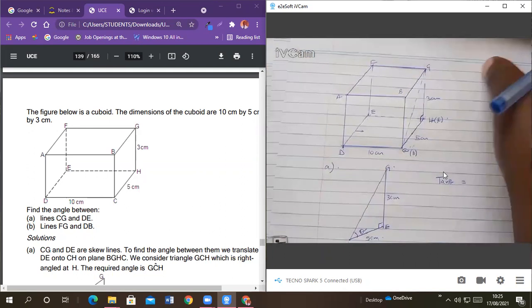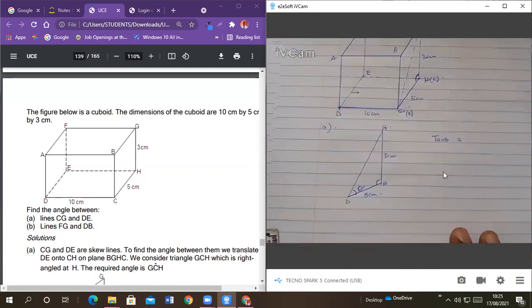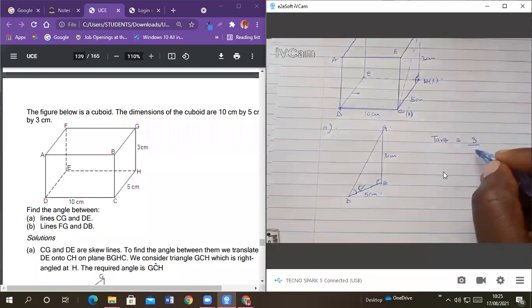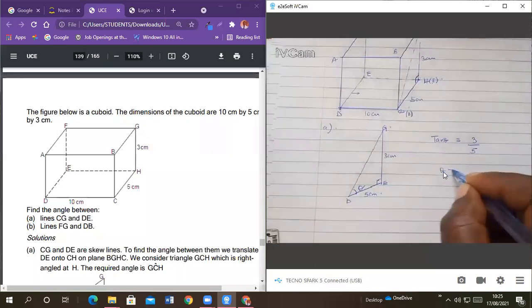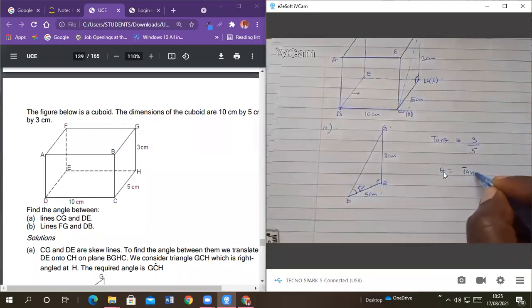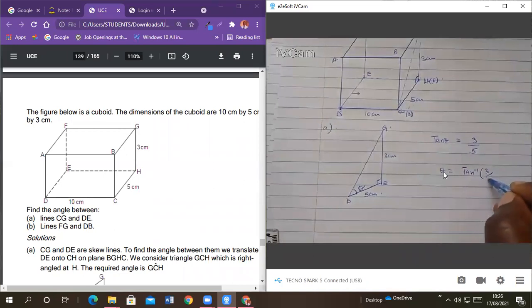So tan theta is equal to, from that case, tan theta is equal to 3 divided by 5. And theta equals to the tan inverse of 3 over 5. So theta is equal to... What's the answer, members? Anyone who has the answer?